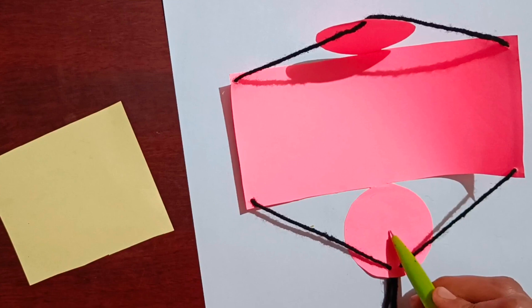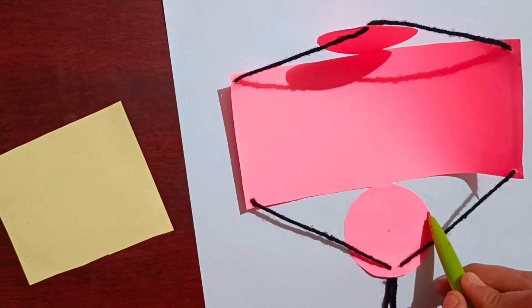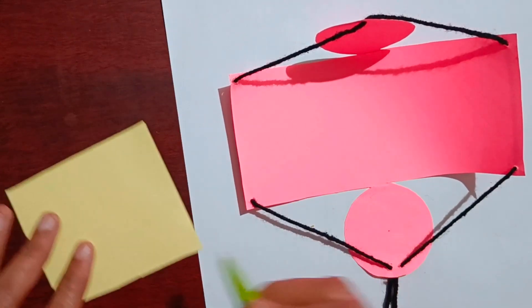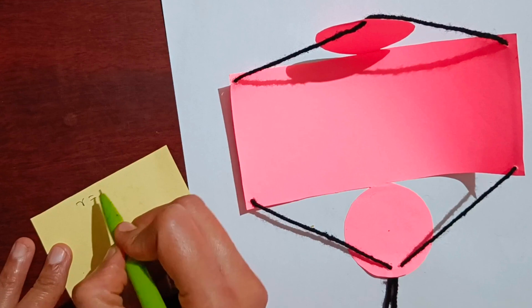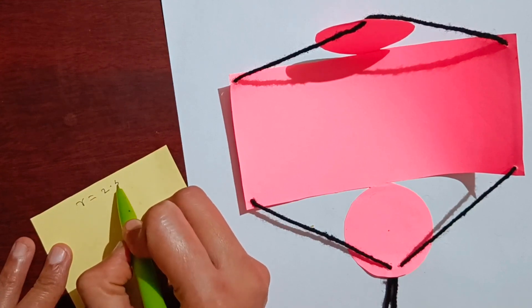So this is the radius, from this point till here is the radius of a circle. So I have taken 2.5 cm radius. Radius is 2.5 cm.